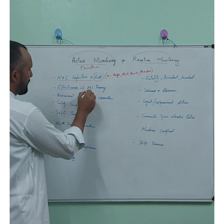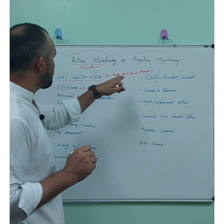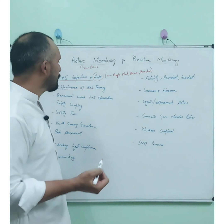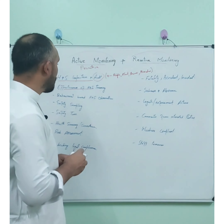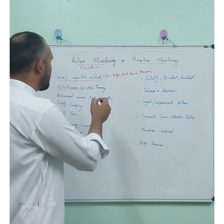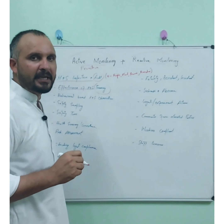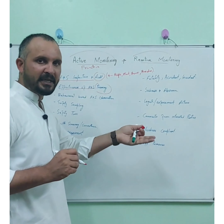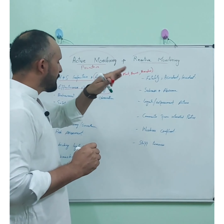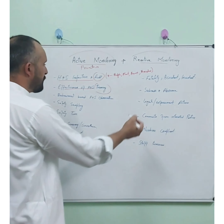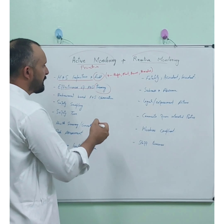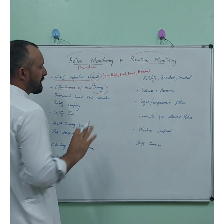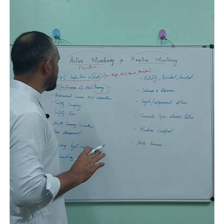After that, we look at the effectiveness of training. We can provide our workforce with training — whether we talk about Toolbox Talks (TBT), safety meetings, or any other method — to promote a positive safety culture in our organization or company. We need to check out and evaluate the training effectiveness of the company.